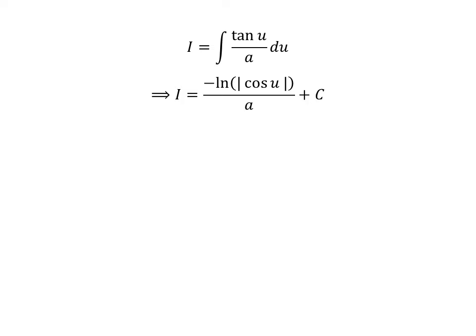The link of the video is also mentioned in the description section. So, i is equal to minus natural log of absolute value of cosine of u upon a plus capital C. Capital C is the arbitrary constant of indefinite integral. Never forget to add this constant.